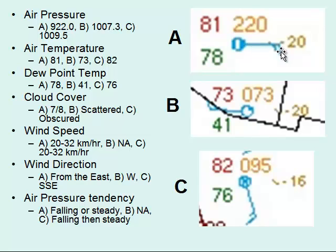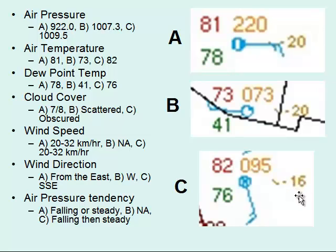Wind speed is determined by counting the small feathers sticking off the vane, and the direction the vane is pointing tells you where the air is coming from. There is also a pressure tendency symbol next to the numbers directly to the right, and those numbers tell you how much pressure is rising or falling — you also need to add a decimal point to those values. All these rules are listed in the station model media.